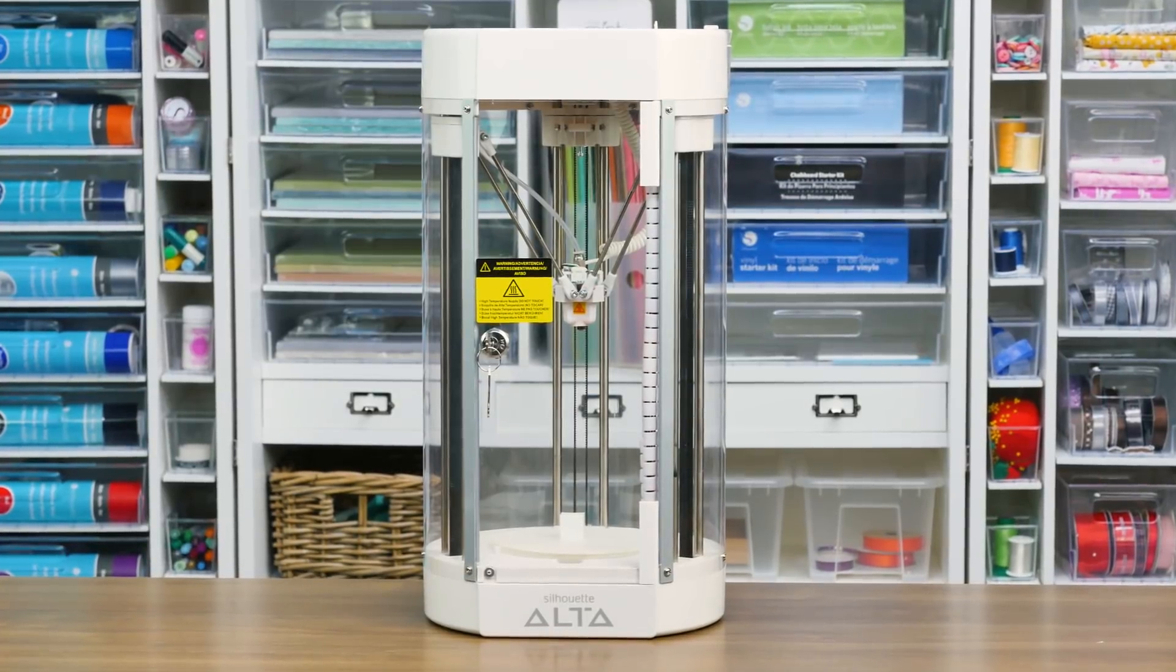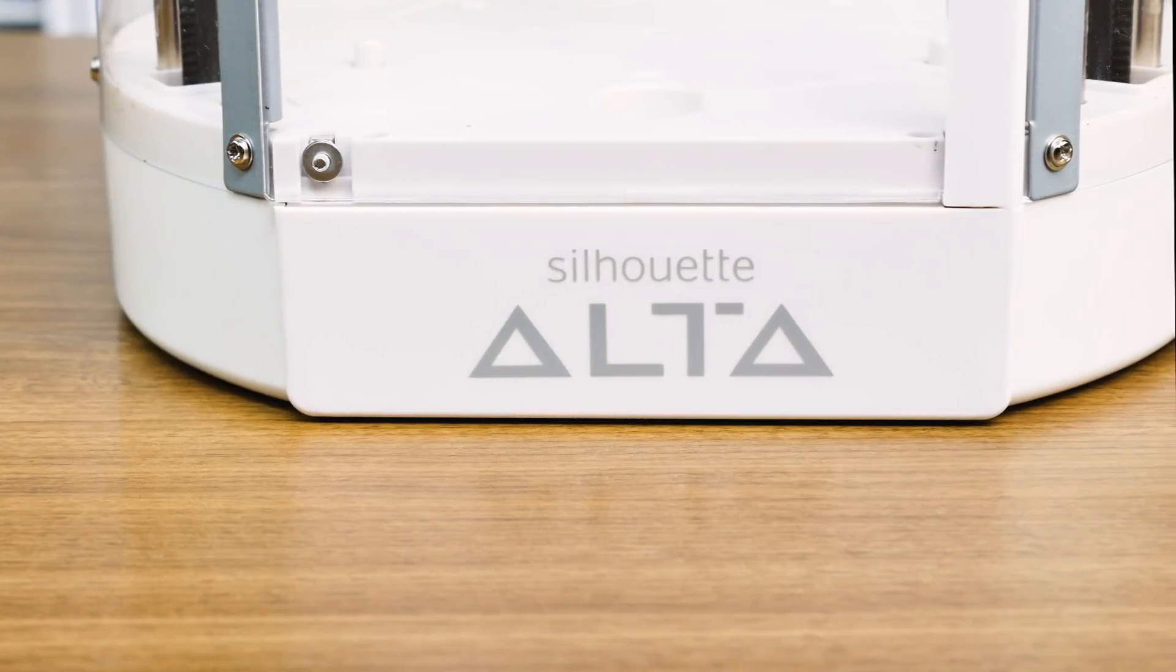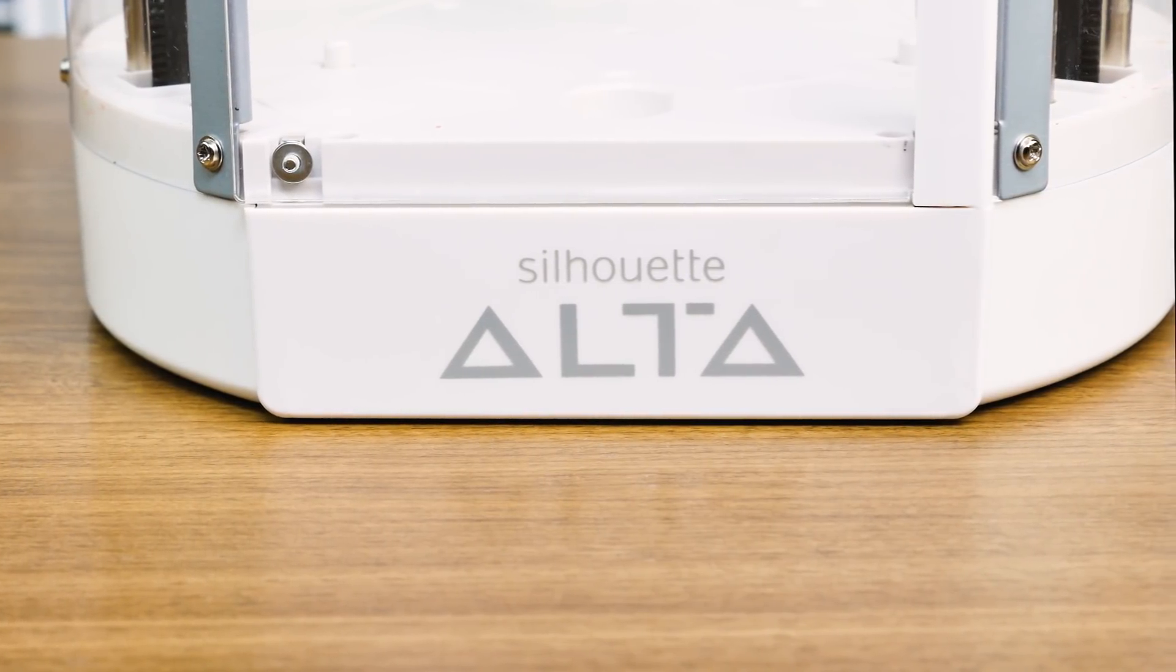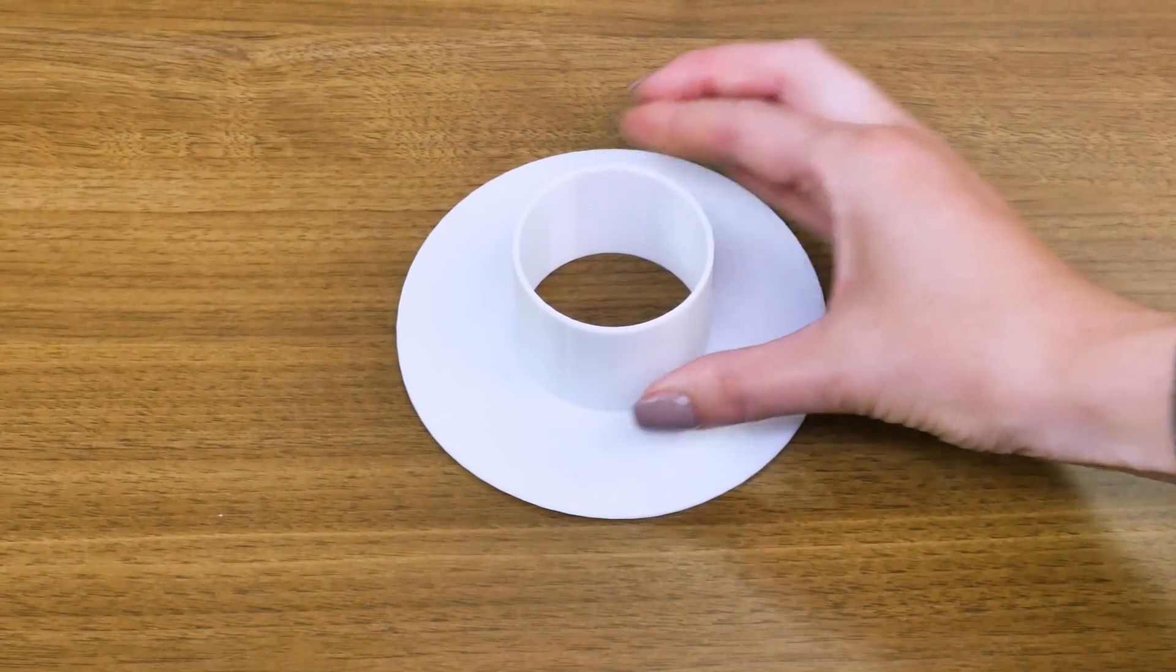Your machine comes pre-assembled and pre-calibrated. Silhouette has already tested the Alta printer to make sure it works. In fact, the filament spool that comes in the box was printed with your very own machine.